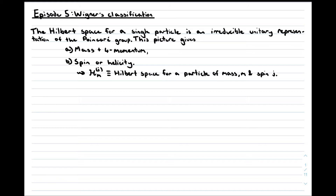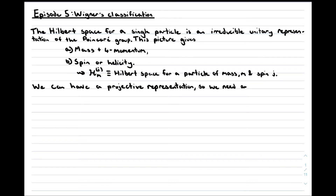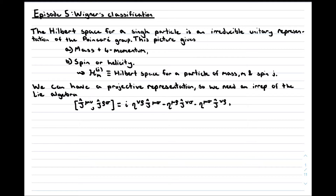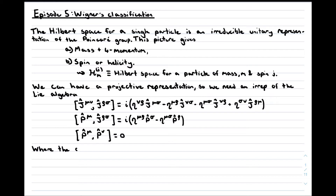Massless particles will get their own video because there are a few extra complications. Recall from our work on projective representations that in order to find an irreducible unitary projective or ordinary representation of the Poincaré group, there is a one-to-one correspondence between these and irreducible representations of the Lie algebra. So our job in this video is to find irreducible representations of the Lie algebra in which the generators are all Hermitian, since that will lead to a unitary representation. This will define a Hilbert space for the Lie algebra to act on, which we identify with the Hilbert space of a single particle state.